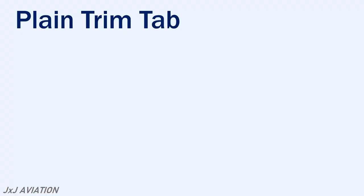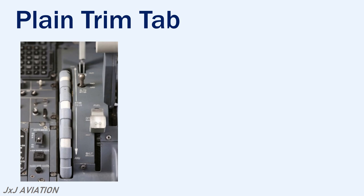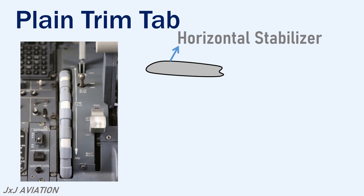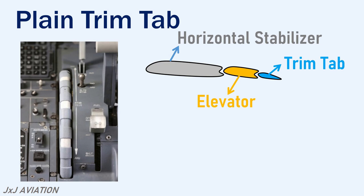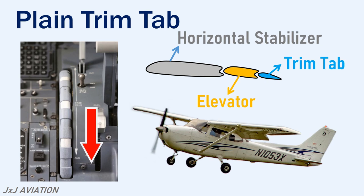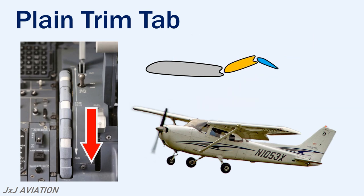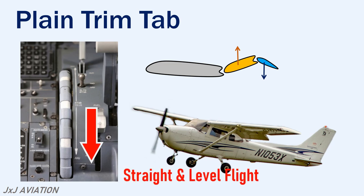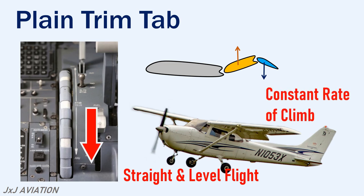The trim tab will be controlled by a trim wheel in the cockpit. Let's consider this as the horizontal stabilizer, this as the elevator, and this as the trim tab. If the trim wheel is rolled down, the aircraft will have a nose up attitude. Here, the trim tab will be deflected down, which will cause the elevator to be deflected up. By giving small adjustments on the trim wheel, the trim tab may be adjusted in order to maintain a straight and level flight or a nose up attitude for a constant rate of climb without moving the elevator.